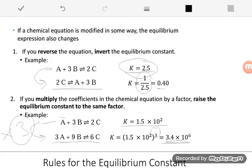So if you reverse, take the inverse. If you multiply, turn that multiplication factor into an exponent for your equilibrium constant.